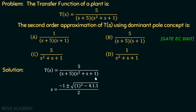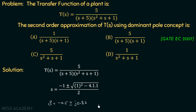All the coefficients of the quadratic terms are equal to 1, so substituting into the quadratic formula we get: minus 1 plus or minus root of (1² − 4·1·1) over 2. Solving this gives s = −0.5 ± j0.86, so we have a pair of complex conjugate poles in the left half plane.